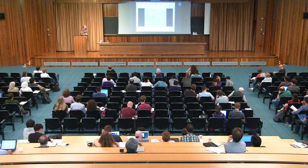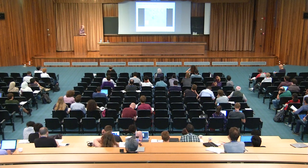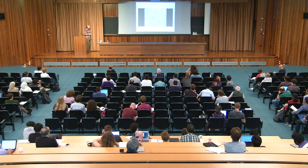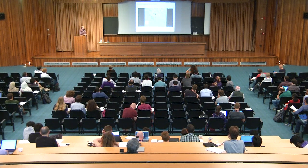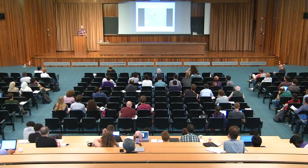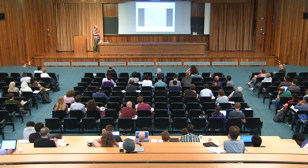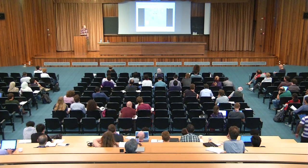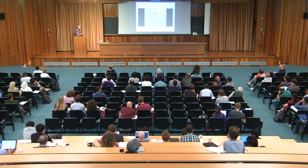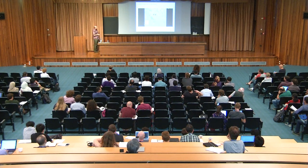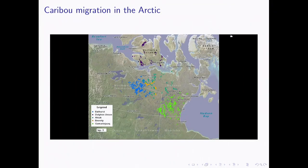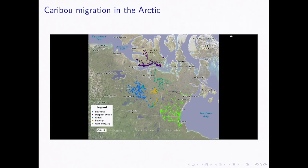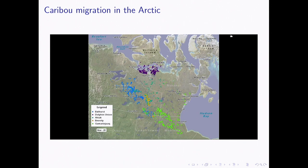We're going to start with caribou migration in the Arctic. Each dot in this movie represents a caribou moving through its landscape, with different colors representing different herds. The caribou on Victoria Island, in the far north of Canada, are making their southern migration from September to December. As winter approaches they build up on the coastline, waiting for the sea ice to freeze, and when it does, they begin their crossing.